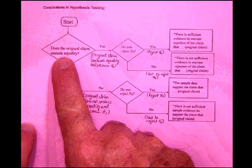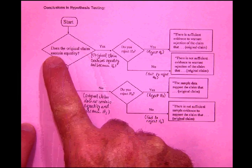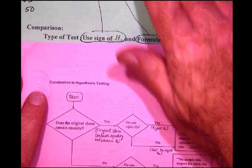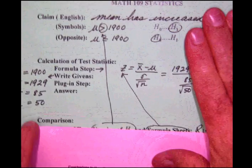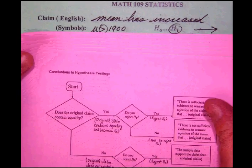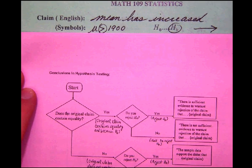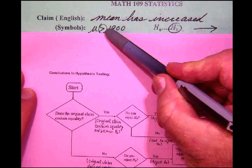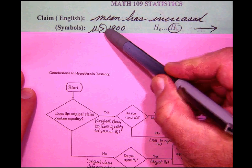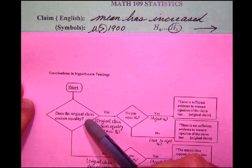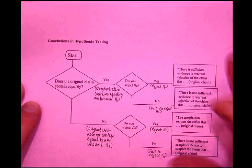In other words, let's go back up here and take a look at what our claim was. The original claim was the symbolic claim. And notice that that symbolic claim did not have an equal in it. It only had the greater than sign. So does the original claim, the symbolic claim, contain equality? And you say, no, it doesn't. So we move our way down to the second diamond.